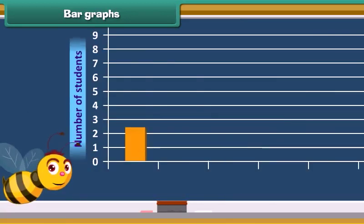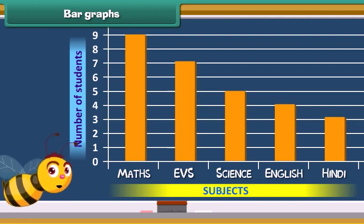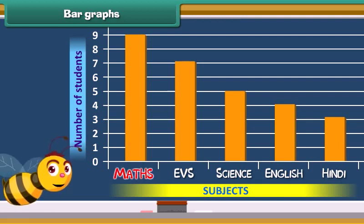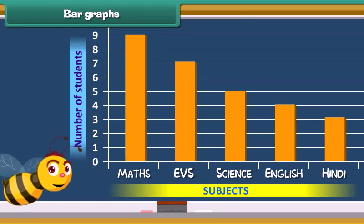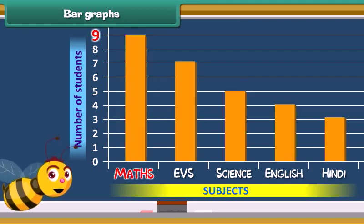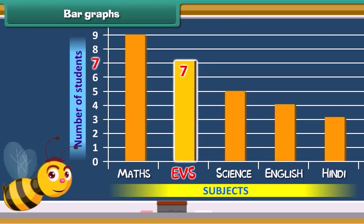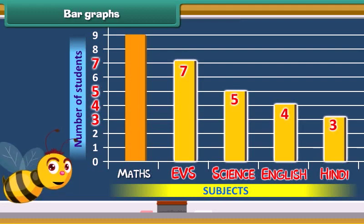The given chart is known as a bar graph. These graphs are another way of data representation. A bar graph uses bars to represent data. In the given graph, subjects are listed at the bottom and the number of students is given at the side. In this graph, 9 blocks tell us about the number of students who like maths. Similarly, there are 7 blocks in EVS, 5 blocks in science, 4 blocks in English, and 3 blocks in Hindi.